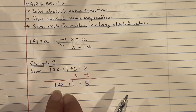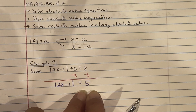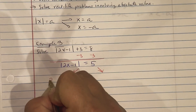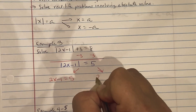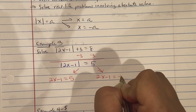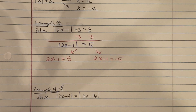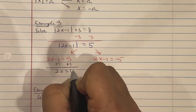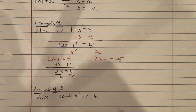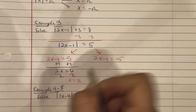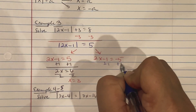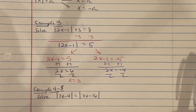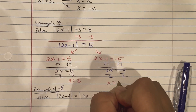Now we're in the setup of absolute bars equaling a positive number, so two scenarios arise. First: 2x minus 1 equals positive 5 — add 1, getting 2x equals 6, divide by 2, x equals 3. Second: 2x minus 1 equals negative 5 — add 1, getting 2x equals negative 4, divide by 2, x equals negative 2.